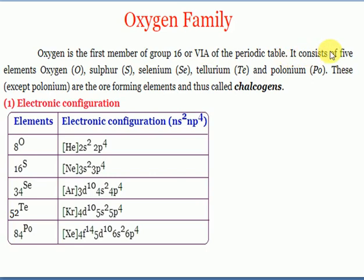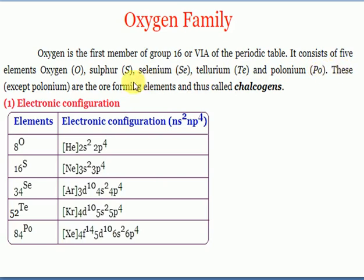The oxygen family generally consists of six elements: oxygen (O), sulfur (S), selenium (Se), tellurium (Te), and polonium (Po). Among these, polonium is a radioactive element, so we will not discuss it much.